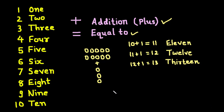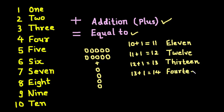Pause the video and try to add one more marble and see which number you get. Adding one more marble, we get 13 plus 1 which is equal to 14. You can see the pattern: by adding 1 to 10 we get 11, by adding 1 to 11 we get 12. After adding one we get the next number — 12, 13, 14.